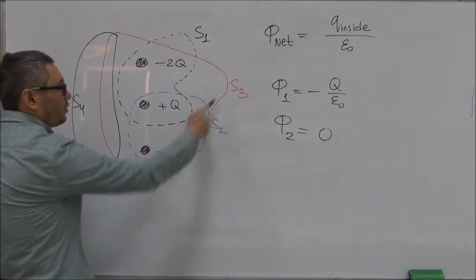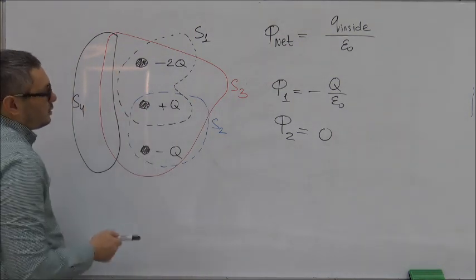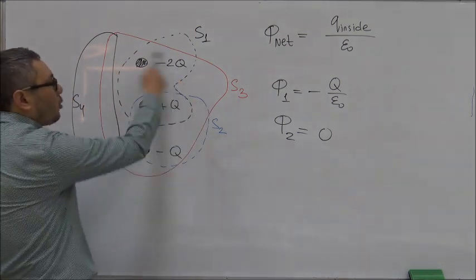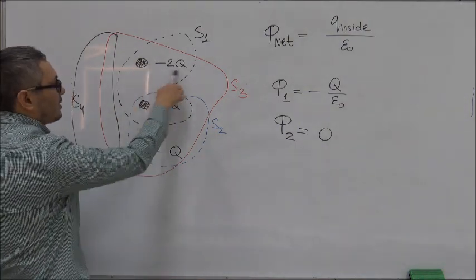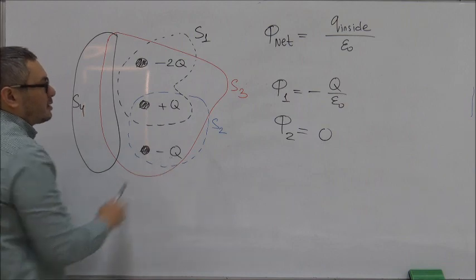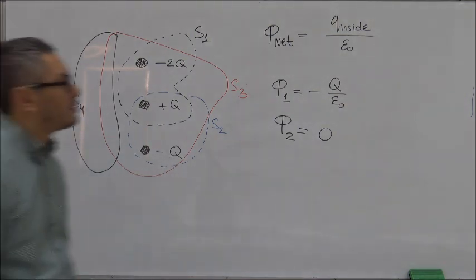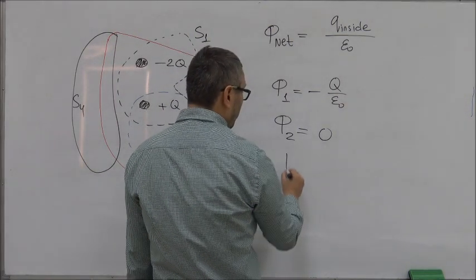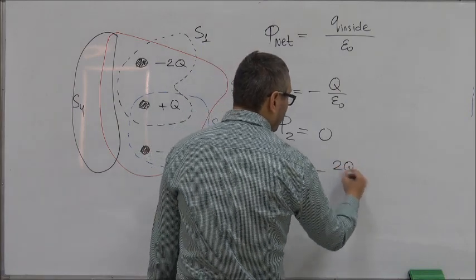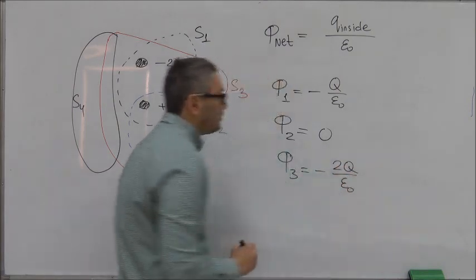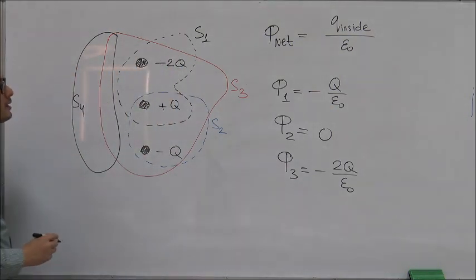The third one, this solid red line, encompasses all three charges, so the net charge is -2q plus q minus q, which gives you -2q. Therefore, Φ₃ equals -2q over epsilon-zero. Finally, the flux through the fourth surface, S4.